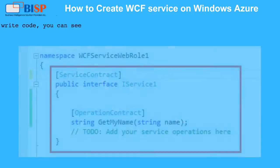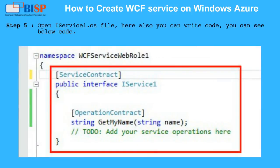Step 5: Open the IService1.cs file. Here you can also write code. You can see the code below.